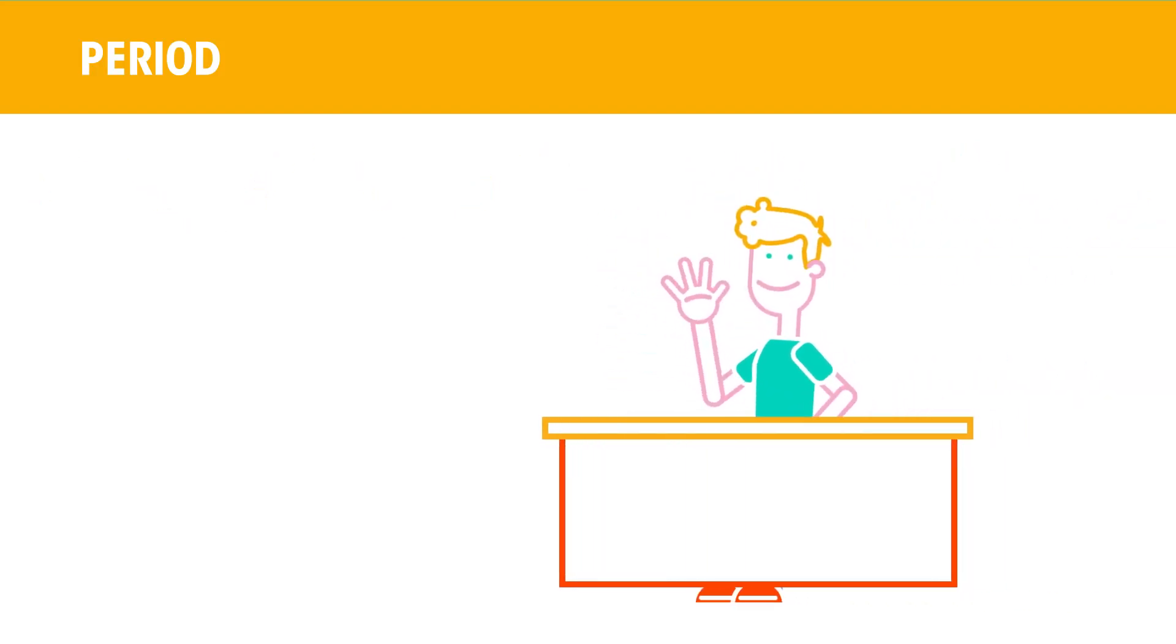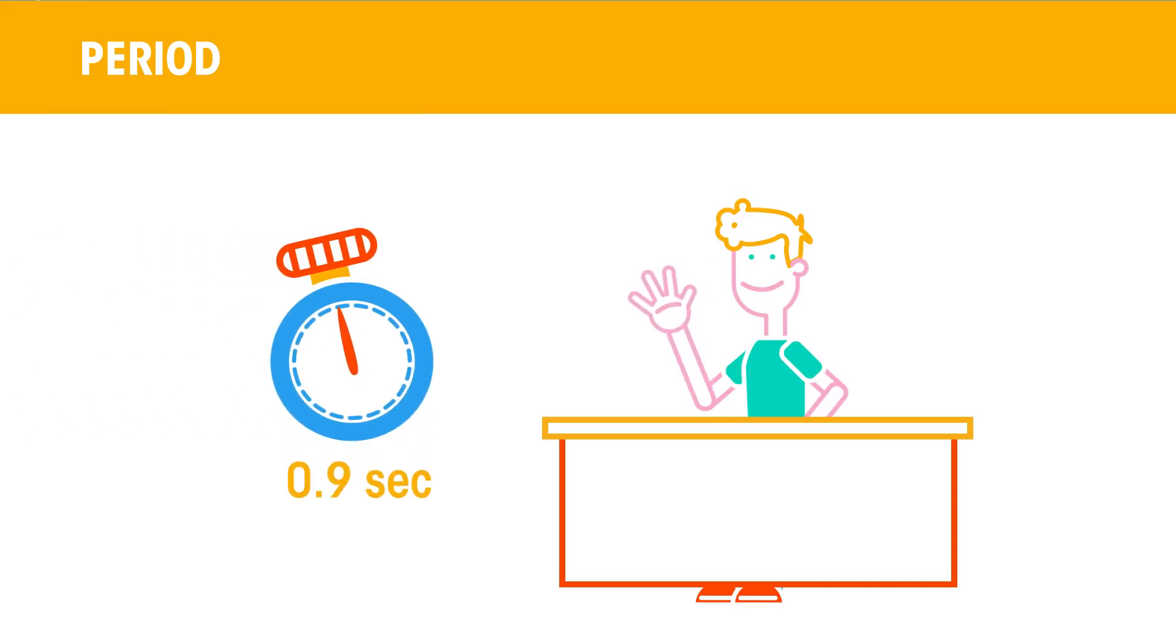The period of a wave is the time for one complete cycle, so the time taken for one person to stand up, wave and sit down. This would be measured in seconds.